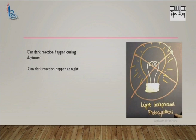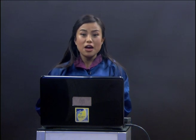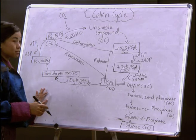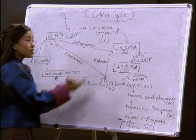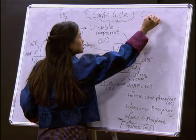Every plant has its own way of fixing carbon dioxide and reducing it into glucose. Some plants such as C3 plants fix and reduce carbon dioxide by the C3 cycle. Some plants do it by the C4 cycle. Some CAM plants do this through the CAM pathway. Since the majority of photosynthetic plants fix and reduce carbon dioxide through the C3 cycle, we are going to focus on the C3 cycle, also called the Calvin cycle.